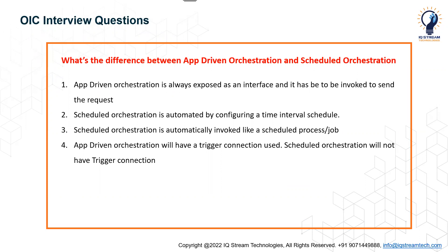The next question is: what is the difference between app-driven orchestration and scheduled orchestration? These are two different types of integrations we can create using Integration Cloud. App-driven orchestration is always exposed as an interface and has to be invoked to send the request, whereas scheduled orchestration is automated by configuring a time and schedule — so it is automatically invoked like a scheduled process or job.